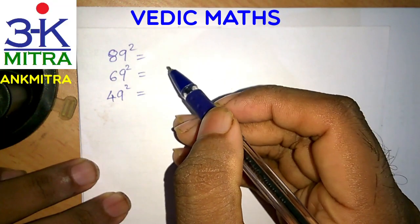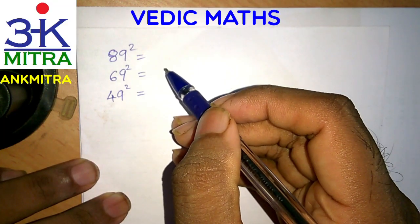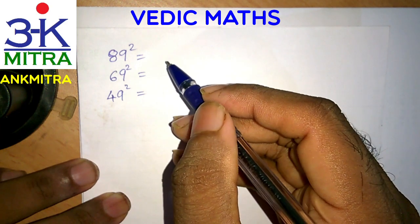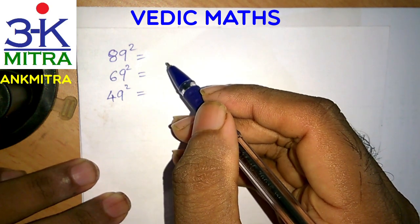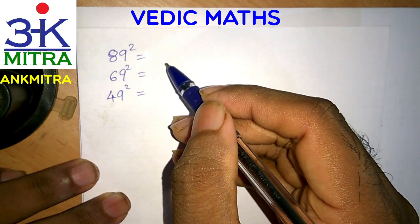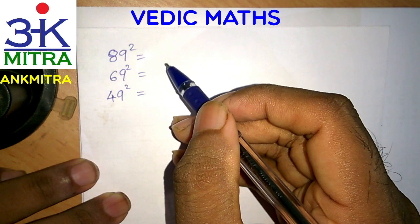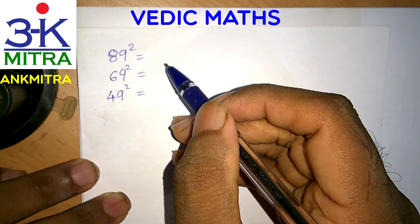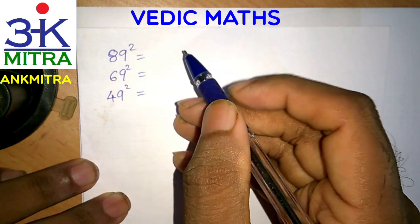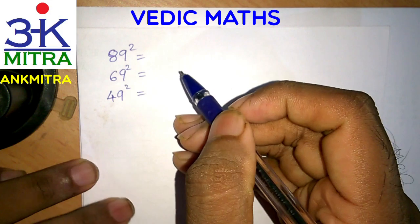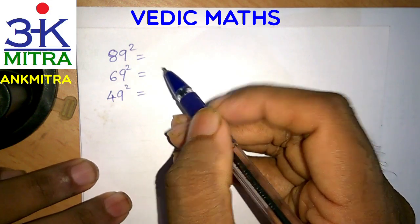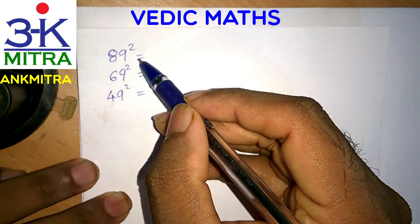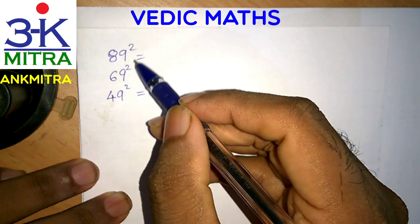Hello everyone. I hope you have seen my previous Vedic maths video in which I had shown the method to find squares of numbers like 91, 71, or 51 in a matter of just three or four seconds. In this video, I will be showing you the method to find squares of numbers like 89, 69, 49.